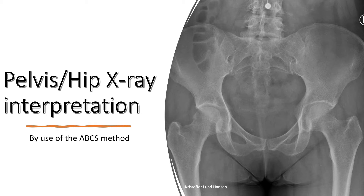This video will teach you how to perform a basic interpretation of a pelvis/hip x-ray. We will use the ABCS method, which I will explain shortly. I like this method as it includes the important parts and it is easy to remember.